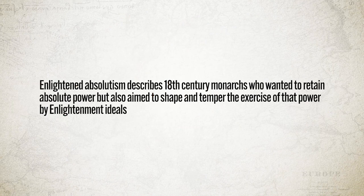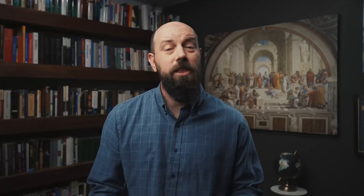In this video we ought to talk about it. Let's start with a definition: enlightened absolutism describes 18th century monarchs who wanted to retain absolute power but also aimed to shape and temper the exercise of that power by Enlightenment ideals.